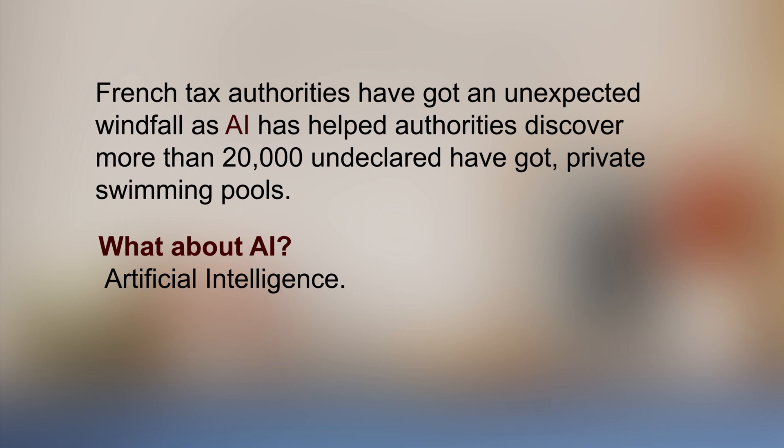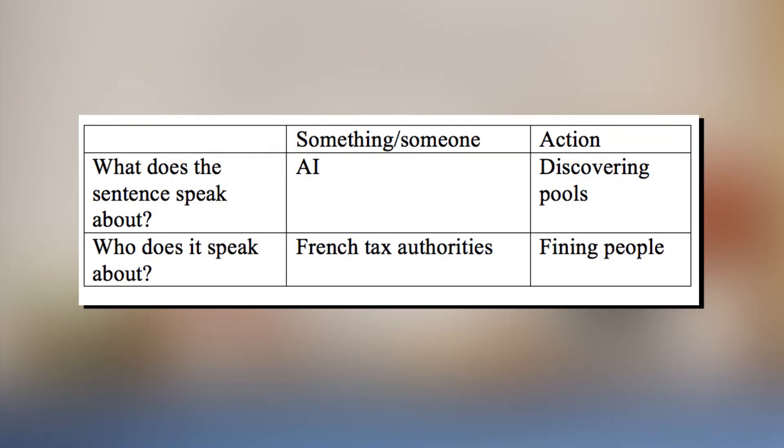With this in hand, let us find the main idea of another sentence. What does the sentence speak about? AI and how it has discovered secret pools. Who does it speak about? The French tax authorities and how they have fined people. So the other key word we have is 'undeclared pools,' and the main idea then would be that AI helps the French tax department find numerous secret pools. Read the other two sentences and write down the key ideas of each.